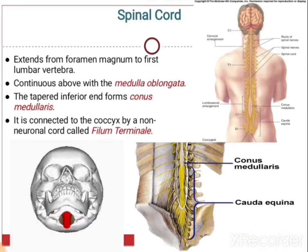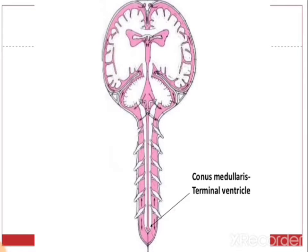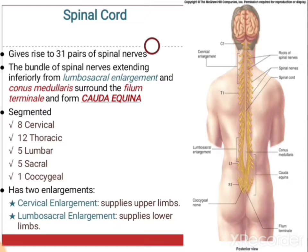The spinal cord is continuous above with the medulla oblongata, and at the lower end it is tapered — this tapering end is known as the conus medullaris. It is connected to the coccyx by a non-neuronal cord known as the filum terminale. The space inside the conus medullaris is known as the terminal ventricle. The spinal cord gives rise to 31 pairs of spinal nerves, and the bundle of spinal nerves extending from the lumbosacral enlargement and conus medullaris forms the cauda equina.